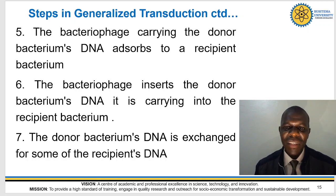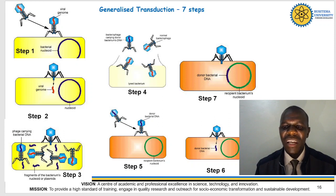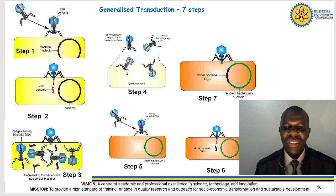There are two types, and the other one is specialized transduction. I've put some scheme illustrations here showing what happens using diagrams, which I think can be better for some of you. I know some people are really interested in seeing these illustrations so this will be helpful, in addition to watching the videos which have been uploaded.